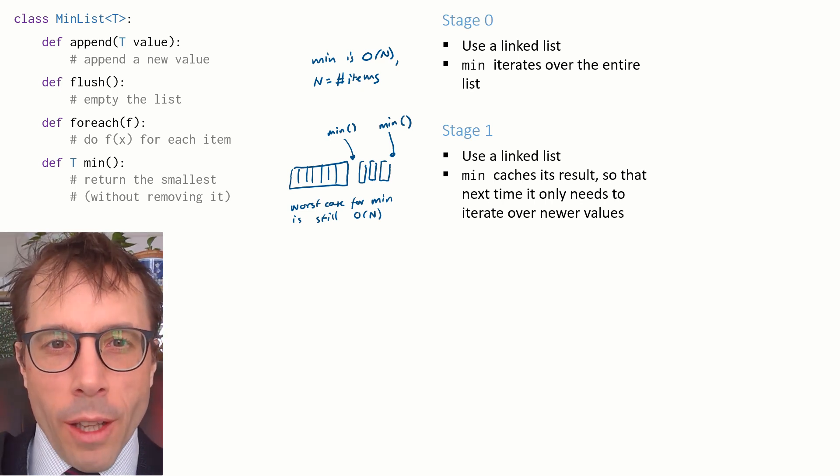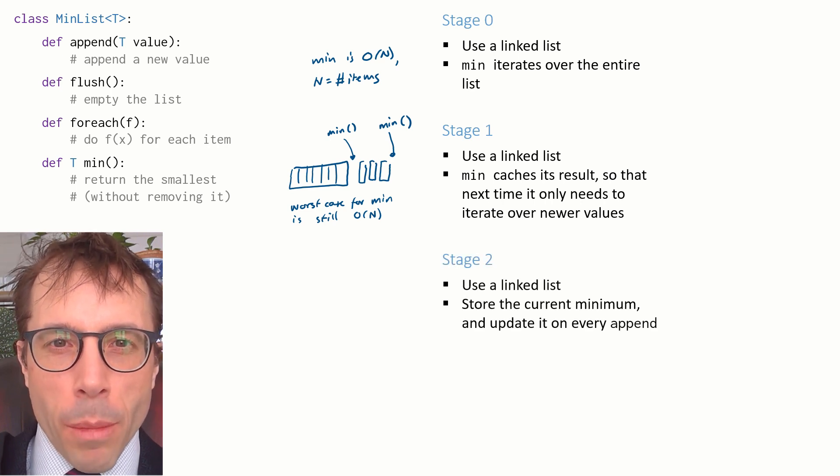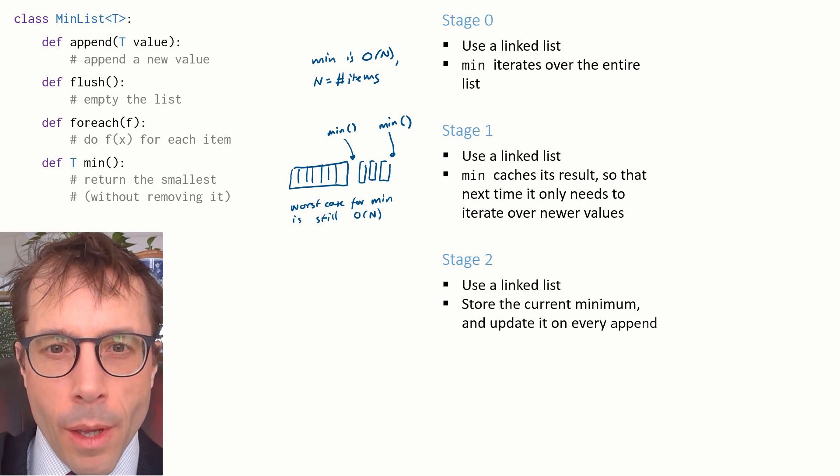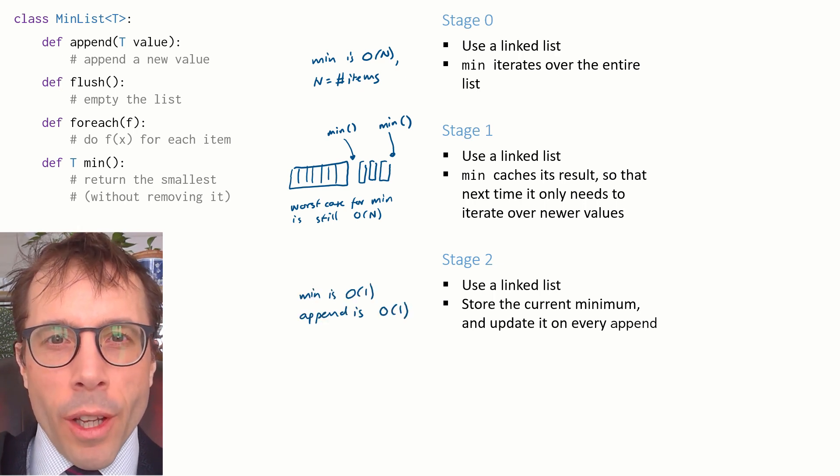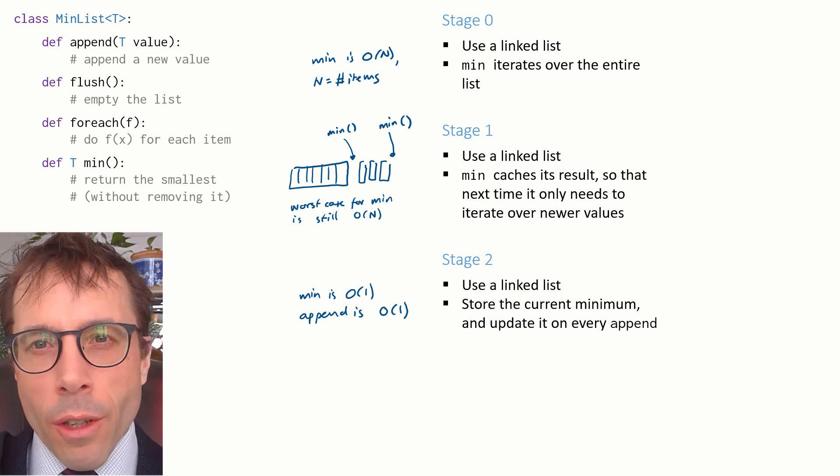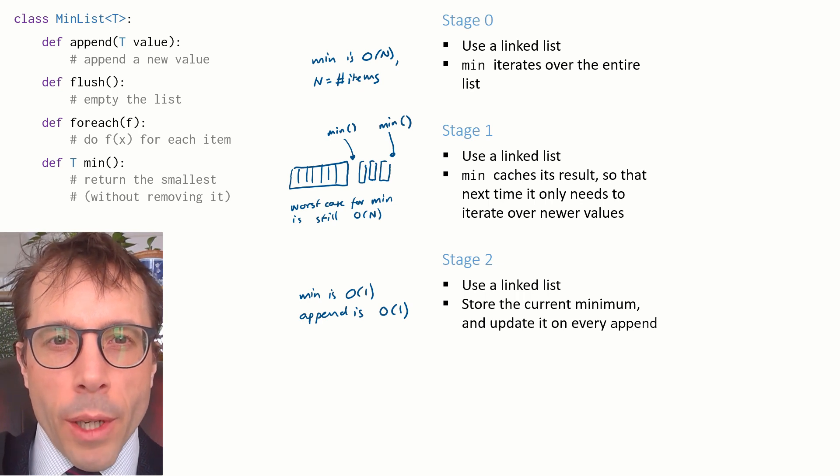Okay, let's try and be cleverer. Let's update our current minimum every single time we append a new item. Then the min function is big O of 1 because we've already computed the answer, and append is also big O of 1 because it's just a constant amount of extra work for each item we append.